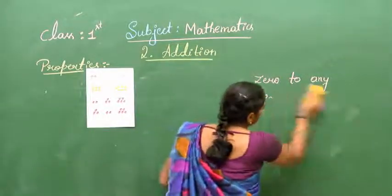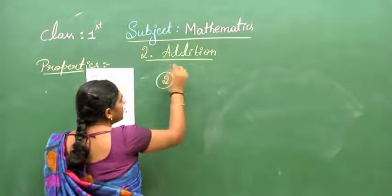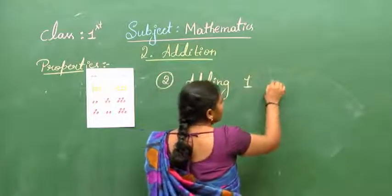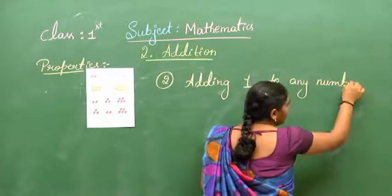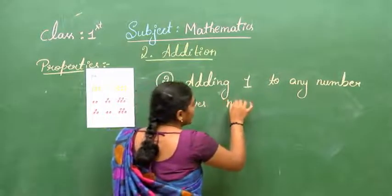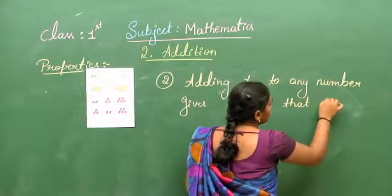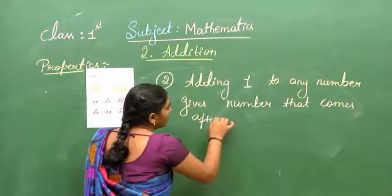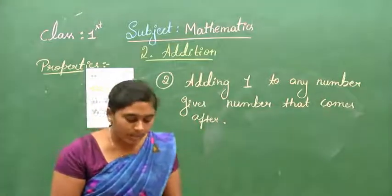The second property says: if you add 1 to any number, adding 1 to any number gives the number that comes after, or you can say, adding 1 to any number gives the next number.